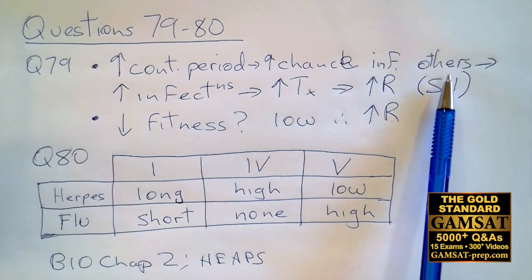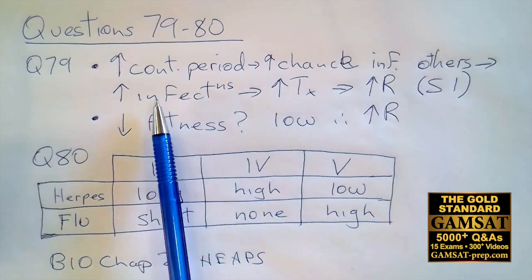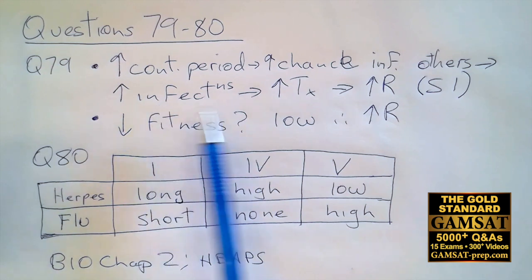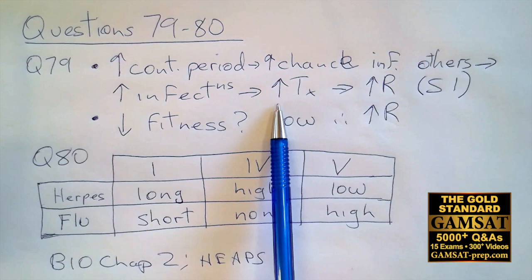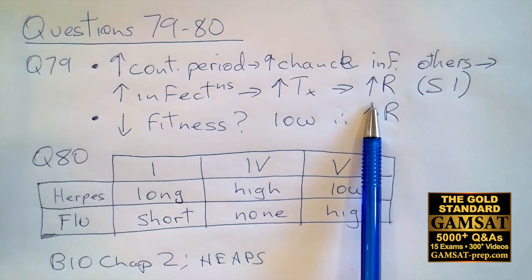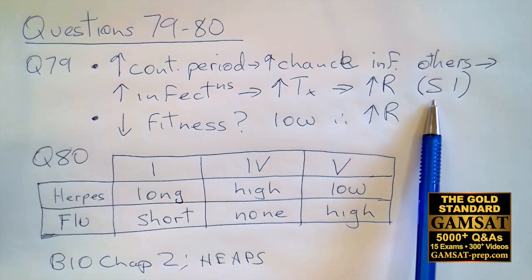And if there's an increase in chance of infecting others, then there will be more infections generally. And if there's more infections, then doctors will treat them. And so there's going to be an increased amount of treatment. And increased amount of treatment means increased resistance. Why? Because of sentence number one.